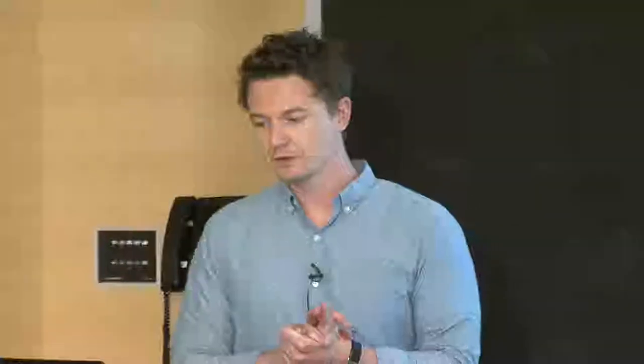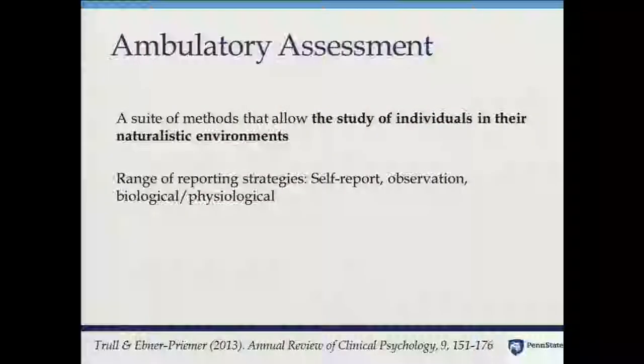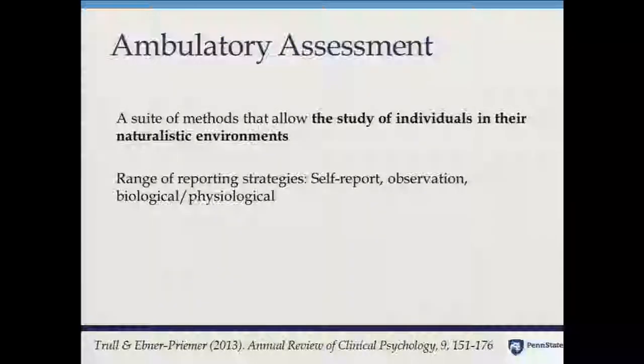We're interested in the social, interpersonal, and affective circumstances associated with use, behavior, and risk for use. Ambulatory assessment has become an umbrella term — I'd recommend the Troll and Ebner primer in the Annual Review of Clinical Psychology. They describe it as a suite of methods that allow us to study individuals in their naturalistic environments. What you tend to find in an ambulatory assessment approach is quantitative methods embedded in people's day-to-day lives.